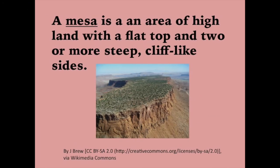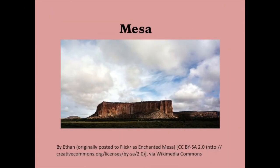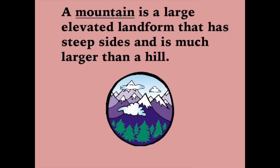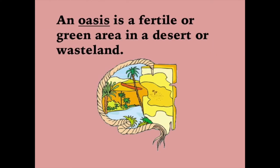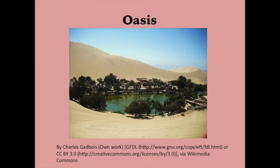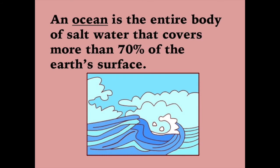A mesa is an area of high land with a flat top and two or more steep, cliff-like sides. A mountain is a large, elevated landform that has steep sides and is much larger than a hill. An oasis is a fertile or green area in a desert or wasteland. An ocean is the entire body of salt water that covers more than 70% of the Earth's surface.